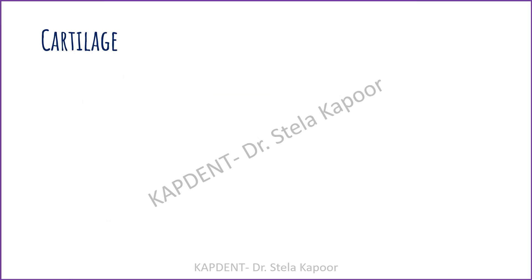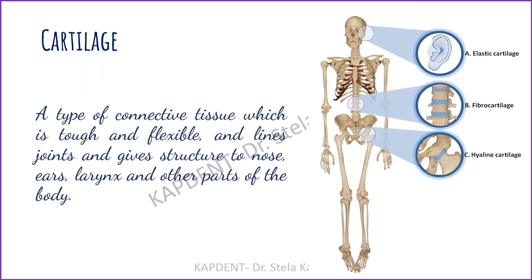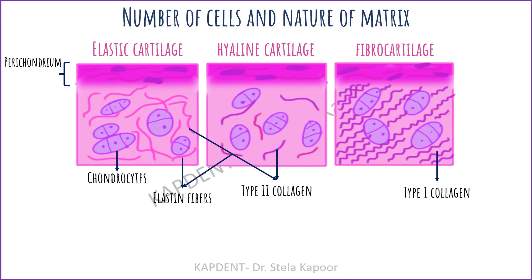Starting with the most basic term: cartilage is a type of connective tissue which is tough and flexible. It lines the joints and gives structure to various parts of the body. Histologically, based on the number of cells and the nature of the matrix, cartilage can be divided into elastic, hyaline, and fibrocartilage.